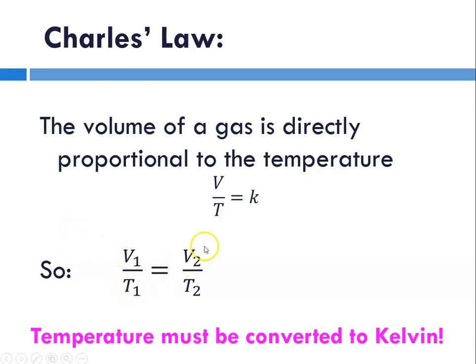And so V1 over T1 is equal to V2 over T2, so volume at temperature 1 and volume at temperature 2. And we can rearrange that equation by cross multiplying to V1 T2 equals V2 T1. So when we're solving Charles law problems, we're talking about a specific quantity of a gas and we look at initial volume and initial temperature versus final volume and final temperature.